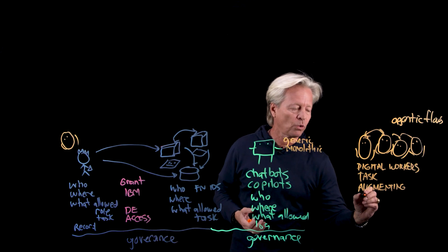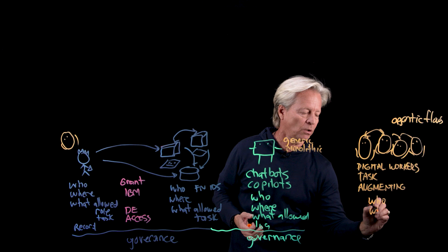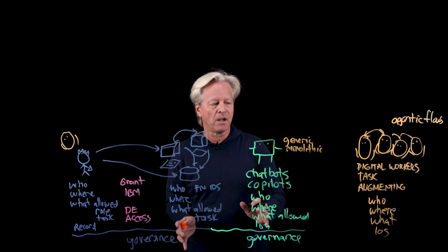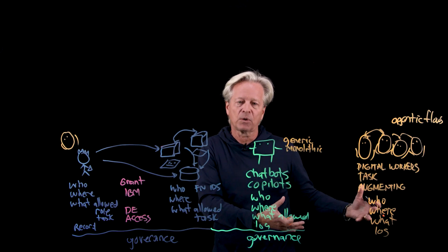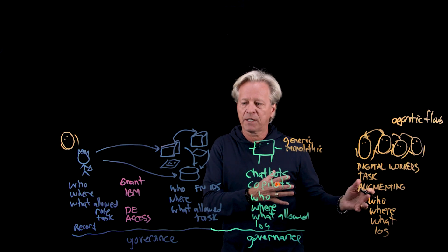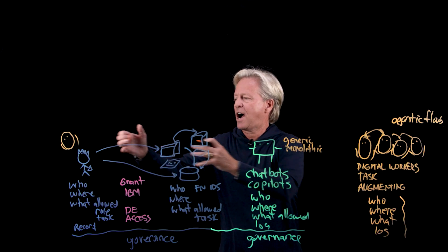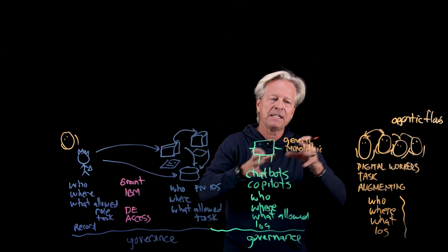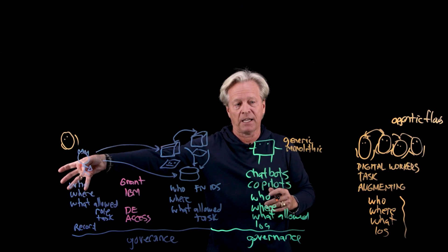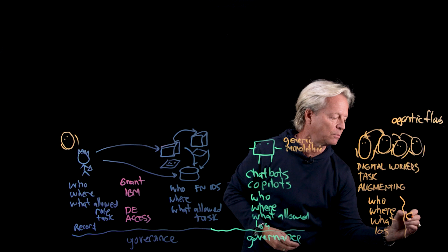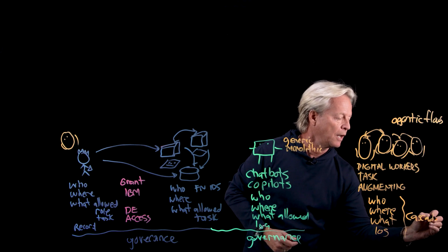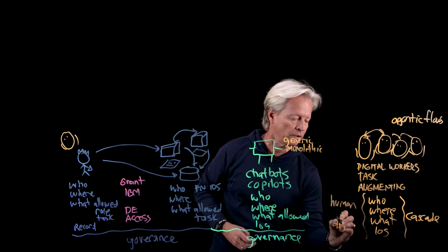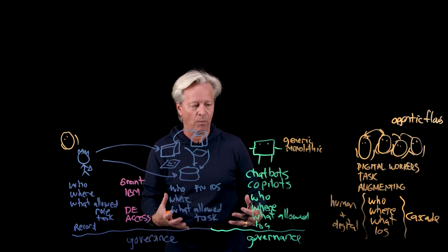When we get back to identity management, a lot of this still remains the same — I still need to know the who, the where, the what they're allowed to do, and I need to log everything. But now there's a spin on this: I have a whole ecosystem of digital workers interacting with a lot of different things. If I start the conversation and I ask a digital worker, who asks another digital worker, who asks another digital worker, the whole identity now needs to cascade. My rights and privileges need to flow through the whole system. The who, where, what must cascade across humans plus digital workers, which adds a layer of complexity.